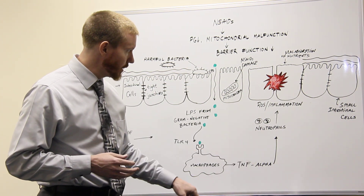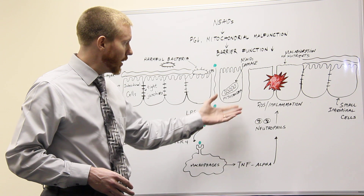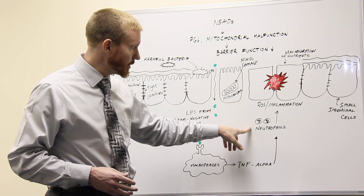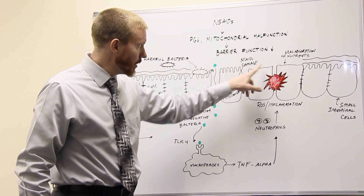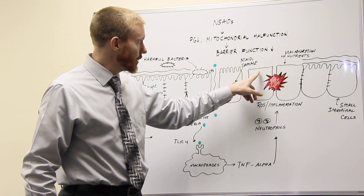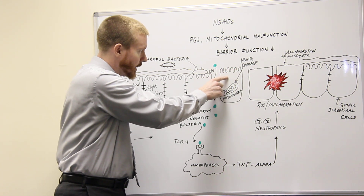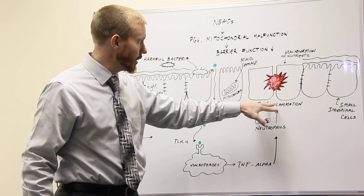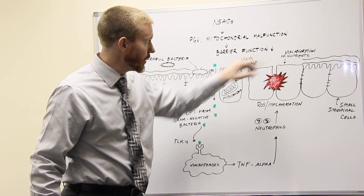When TNF-alpha is increased, that brings in other cells of the immune system called neutrophils. The neutrophils are trying to repair damage done to the intestinal cells and will increase production of reactive oxygen species, causing even more inflammation and damage to the cells of our gut lining. This whole process also causes damage to the microvilli — the finger-like projections at the top of our intestinal cells where absorption of nutrients takes place. After all this inflammation damages those microvilli, we get malabsorption of nutrients in the body.